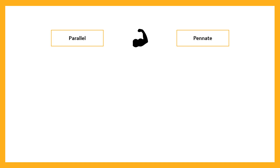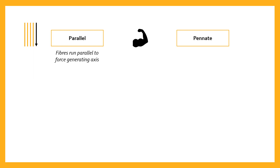A parallel muscle is one in which the fibers run parallel to the force generating axis. The force generating axis is the overall direction of pull of the muscle — when all the forces of all the fibers are added together. The diagram in the top left-hand corner represents this: the yellow line represents the muscle fibers, and you can see it's parallel with the black arrow, which represents the force generating axis.